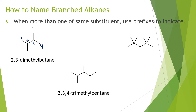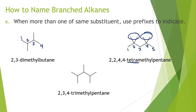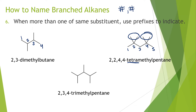For four of the same substituent, we use the prefix 'tetra.' In this example, two methyl groups are on carbon two and two are on carbon four, giving 2,2,4,4-tetramethyl — you repeat the number to indicate where each methyl group is. Regarding punctuation: when separating two numbers from each other, use commas; when separating numbers from letters, use hyphens. So number-number gets a comma, and number-letter gets a hyphen.